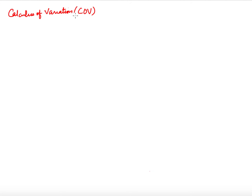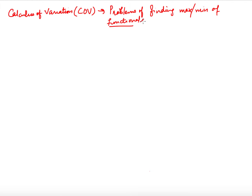Hello everyone, welcome to this third video of calculus of variation — we are using COV as the short form. Calculus of variation is the study of problems of maxima and minima of functionals. A functional is a function of functions: its domain is a set of functions. We input a function into the functional to obtain some real or complex number.